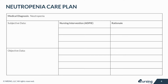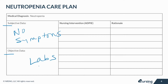Let's take a look at some of the subjective and objective data that your patient with neutropenia may present with. Subjective data is based on your patient's opinions or feelings. With neutropenia, it typically will not elicit symptoms, but patients might have symptoms from the actual cause of the neutropenia or subsequent infections. Many patients are unaware until labs are drawn and the diagnosis is made. Objective data consists of an absolute neutrophil count of less than 1,500 cells.